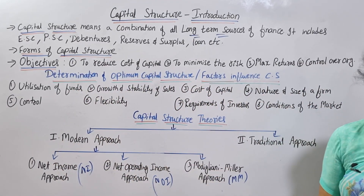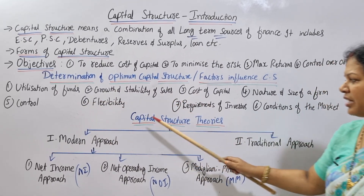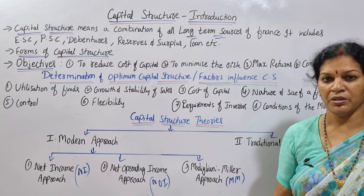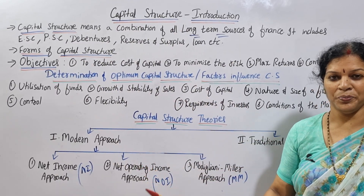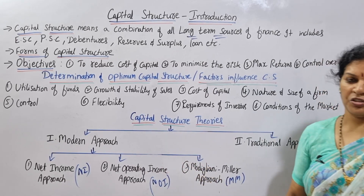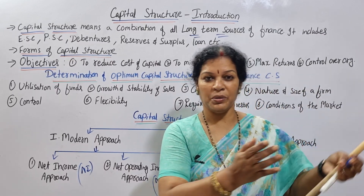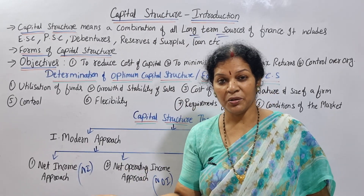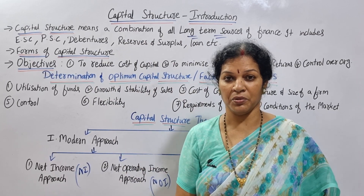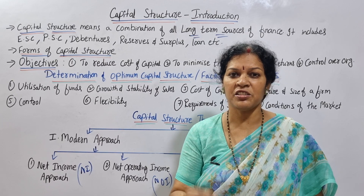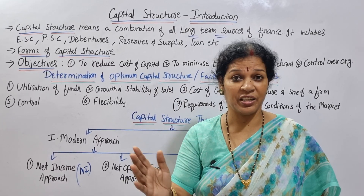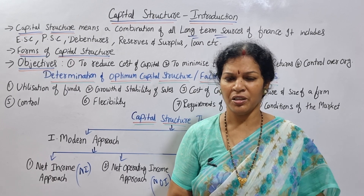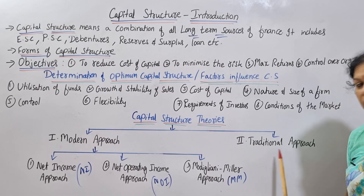So those are 8 key factors influencing capital structure. The next important topic is capital structure theories, which are very important to understand. There are two main approaches: the traditional approach and the modern approach. The modern approach contains three methods.